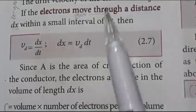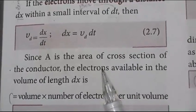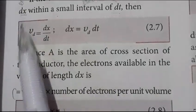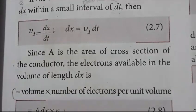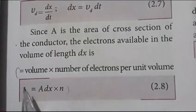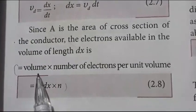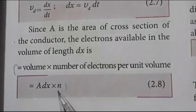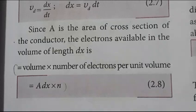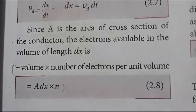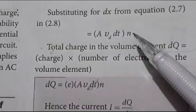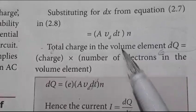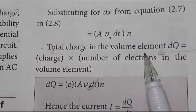A is the area of cross section of the conductor. The number of electrons available in the volume element of length dx equals volume multiplied by number of electrons per unit volume, that is A into dx into n. Substituting dx, this becomes A into vd·dt into n.